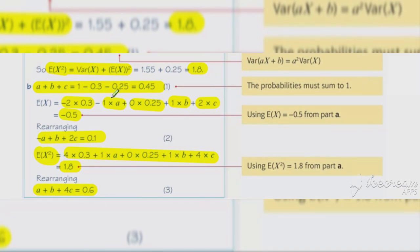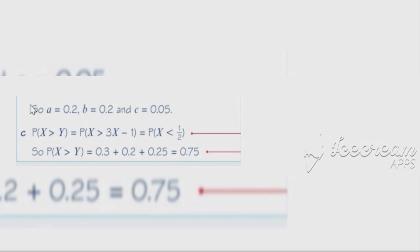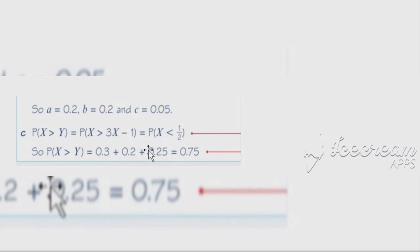From those three bits of information we get three simultaneous equations which we solve to find a is 0.2, b is 0.2, and c is 0.05. For the last part, we work out the probability that x is greater than y. Substituting y equals 3x minus 1, we get P(x > 3x − 1), which rearranges to P(x < 0.5). Picking out the corresponding probabilities from the table — 0.3, 0.2, and 0.25 — gives a final answer of 0.75.